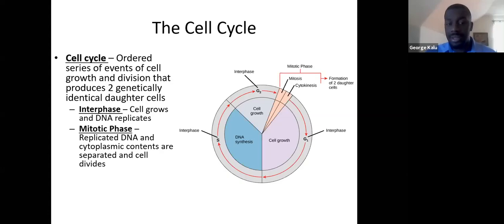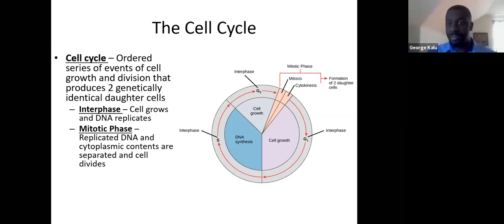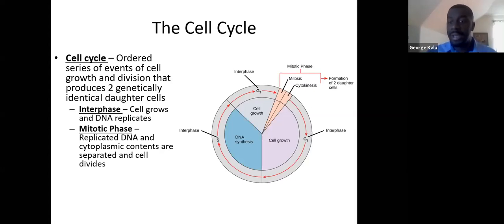It's important that the daughter cells are genetically identical to the parent cell — we want skin cells developing from skin cells, muscle cells from muscle cells, eye cells from eye cells. We don't want to produce eye cells on our arm, for example. The two phases of the cell cycle are interphase, where the cell grows and replicates its DNA, and the mitotic phase, where everything divides into two individual cells.